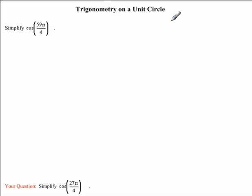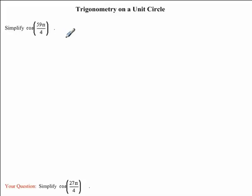In this mini-clip, we'll be discussing trigonometry on a unit circle. While we answer this question together, you'll be solving a similar problem on your own using the same technique. We're asked to simplify cos of 59π over 4. We're going to solve this question by graphing our terminal arm on the quadrant plane.